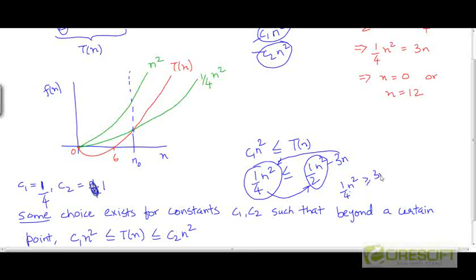We get that 1/4 of n squared is greater than or equal to 3n. As n grows large, we know that this will always hold, because 1/4·n² is going quadratically whereas 3n is going linearly. So eventually the quadratic function is going to overtake this linear function, which basically means that t of n is going to be greater than or equal to c1 times n squared once n grows large enough.